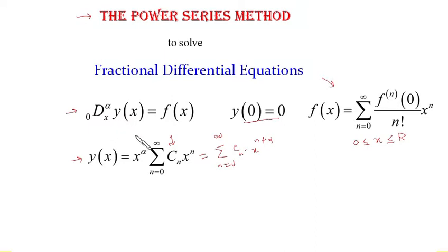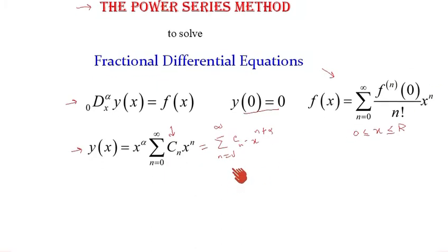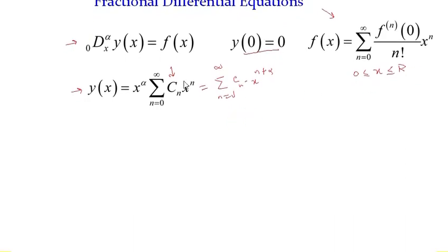How can I do this? I just need to plug the value of y(x) and f(x) into the fractional differential equation, apply the fractional derivative, then compare the powers of x and find the values of c_n. It's a very simple and elegant method. First we need to plug the values of y(x) and f(x) into the given fractional differential equation.